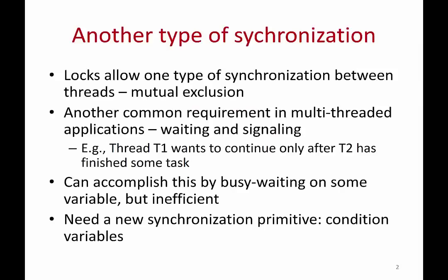In this lecture we are going to study another synchronization primitive between threads called condition variables. We have seen one type of synchronization between threads which is locks. If threads need mutual exclusion, if we require that only one thread is executing at a time, then we will use locks.